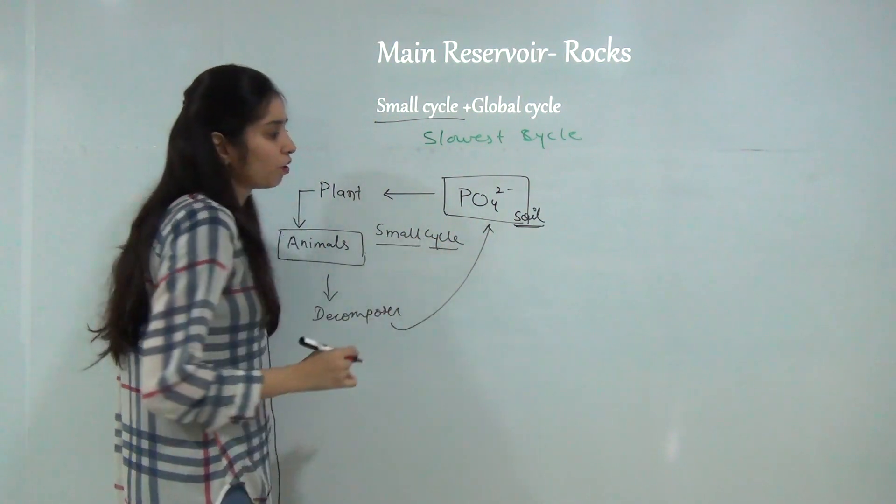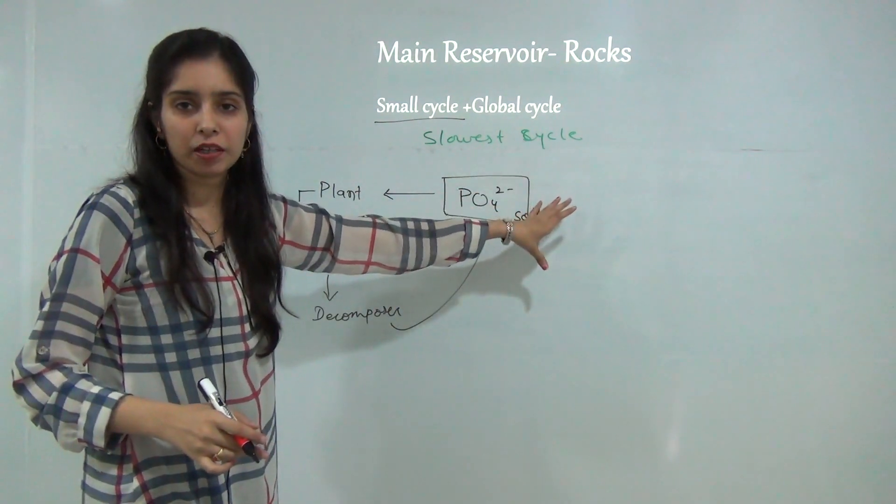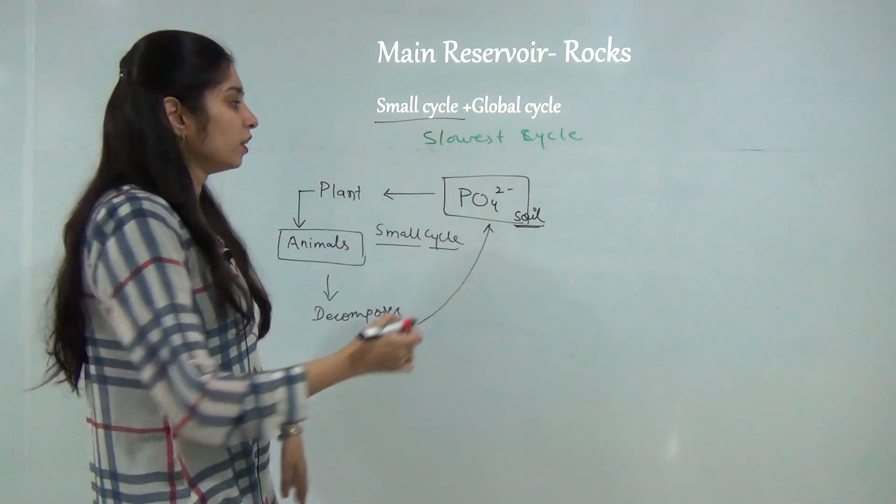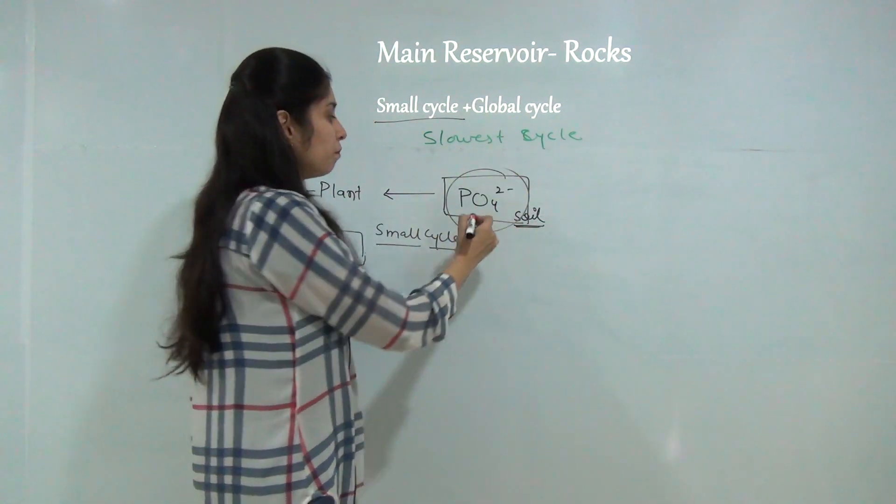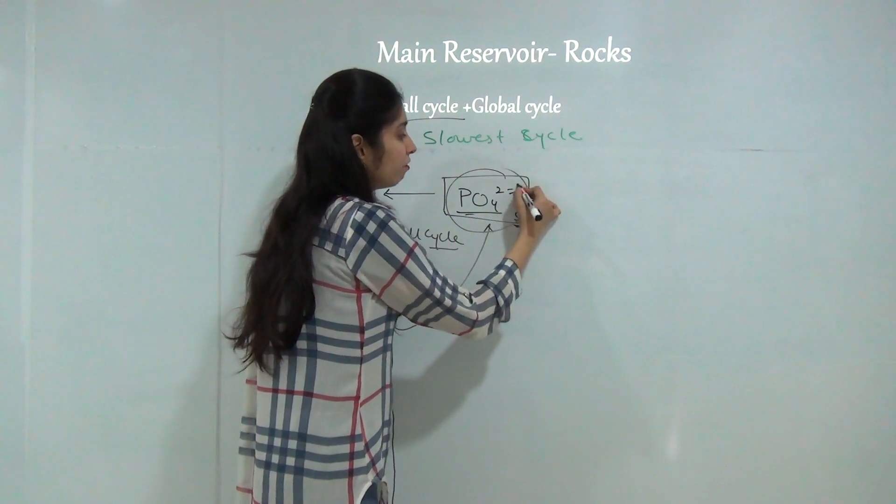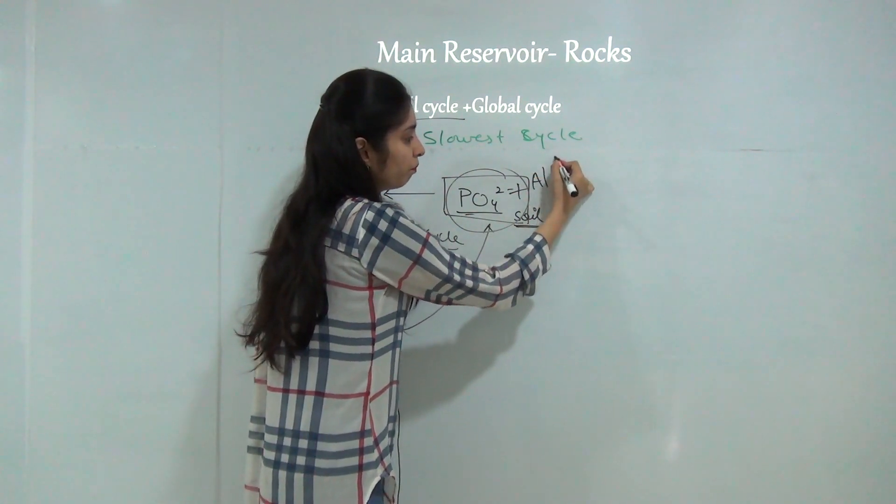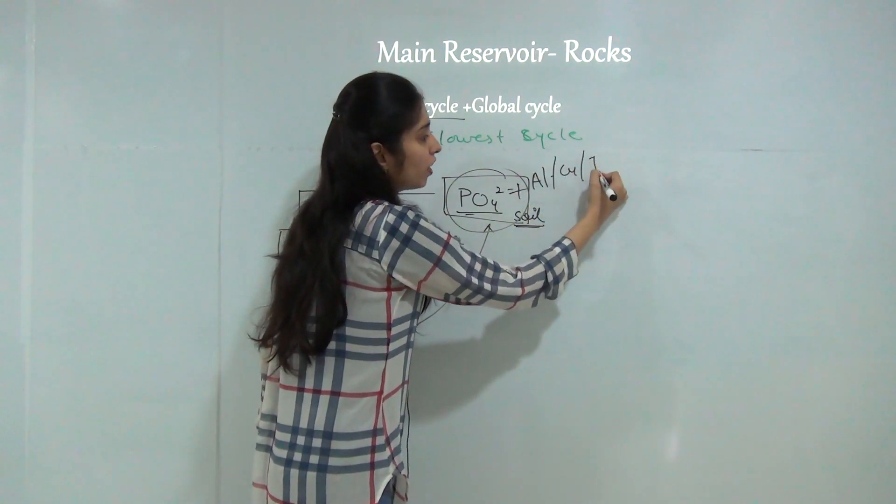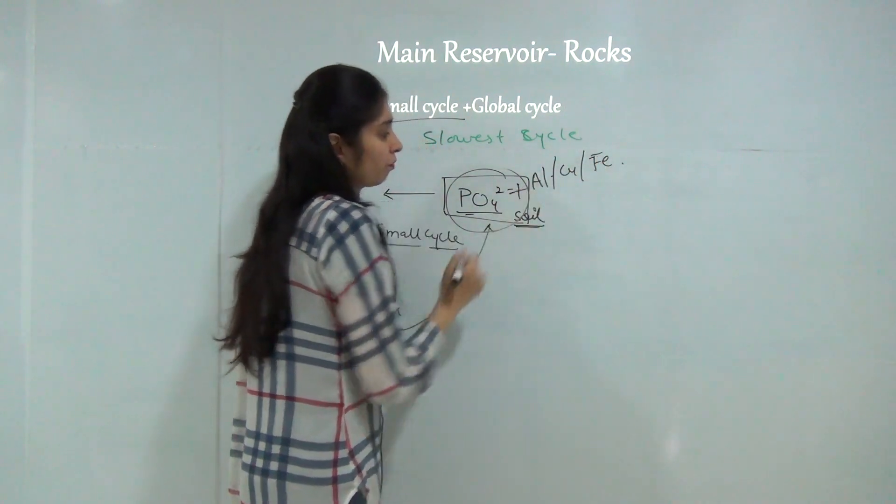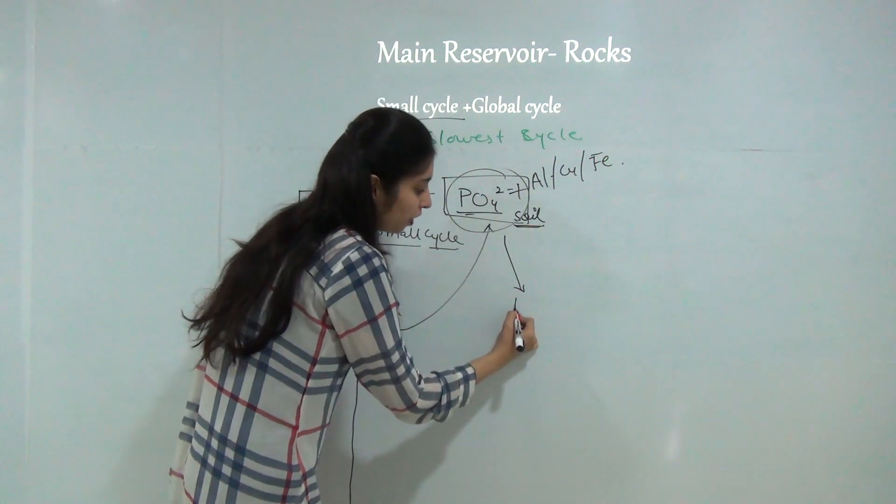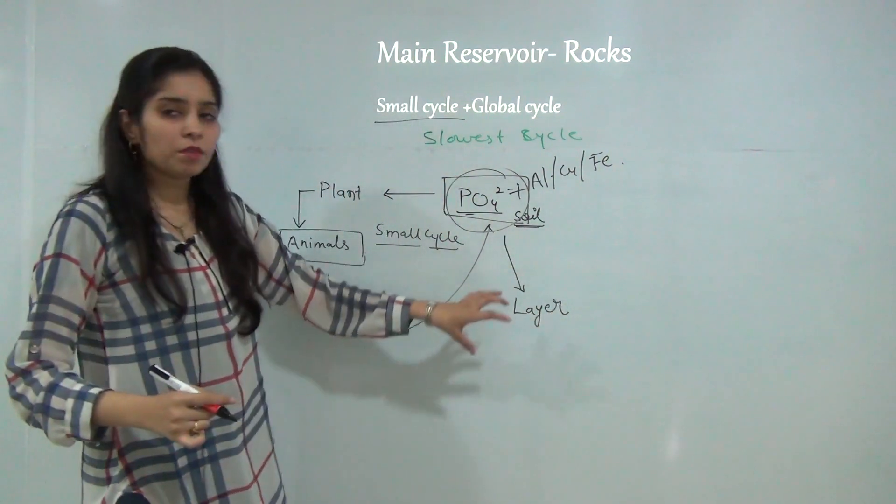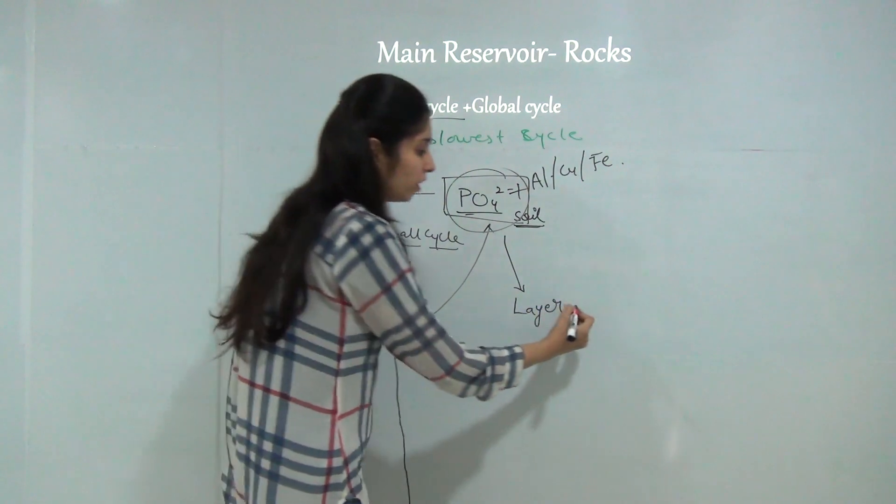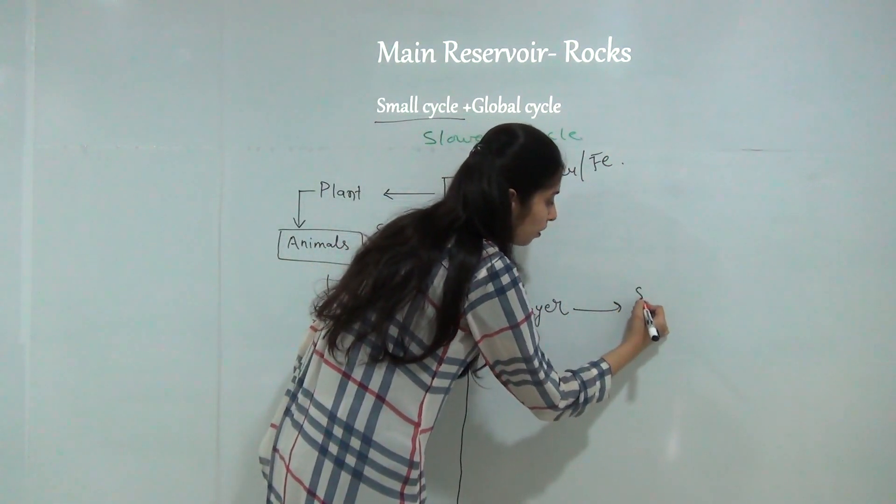In this process phosphorus is not added with any other element, but in the area of coastal regions and ocean related regions sometimes phosphate is added with aluminum, copper or iron elements, and in coastal region it makes some layers. After some time such layers are converted into sedimentary rocks.